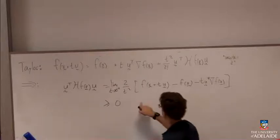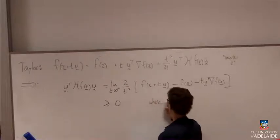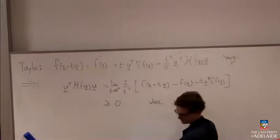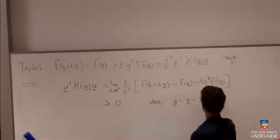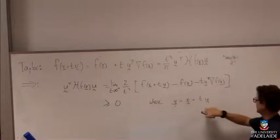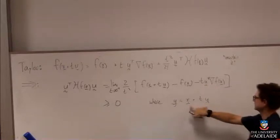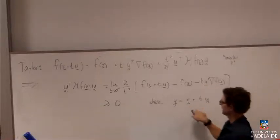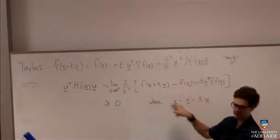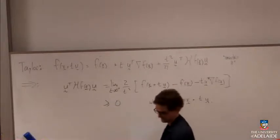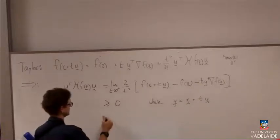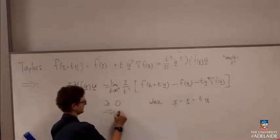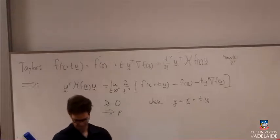To make it a little bit clearer, if I put y equals x plus tu, so long as I set u to be equal to this object here, and that's literally the definition of convexity, and so we've got that. So this is always greater than zero, which means positive definite.